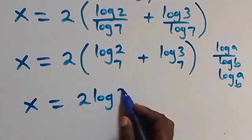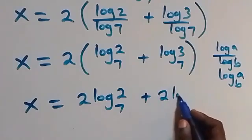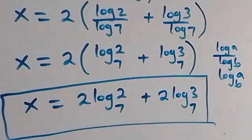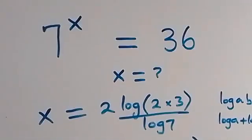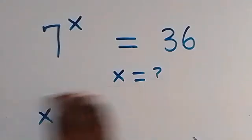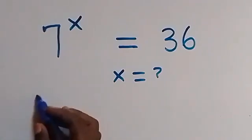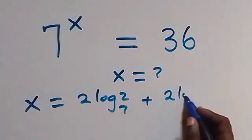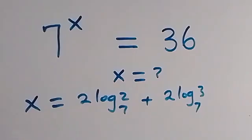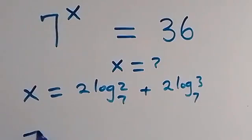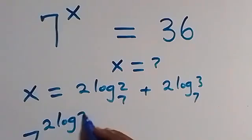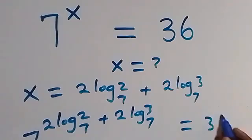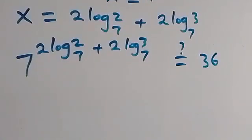Opening the brackets, we have x equals to 2 log base 7 of 2 plus 2 log base 7 of 3. So here we have the final answer. Let's check if this satisfies the given problem. We substitute x equals to 2 log base 7 of 2 plus 2 log base 7 of 3 back in, giving us 7 raised to power (2 log base 7 of 2 plus 2 log base 7 of 3) equals to 36.